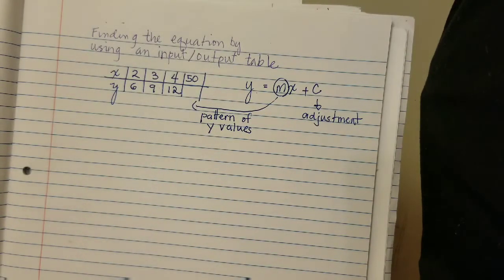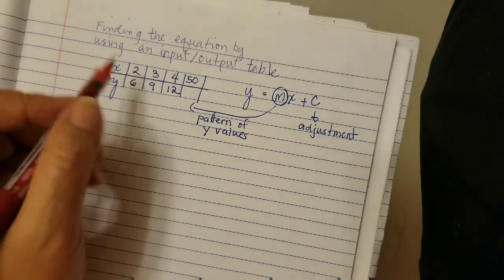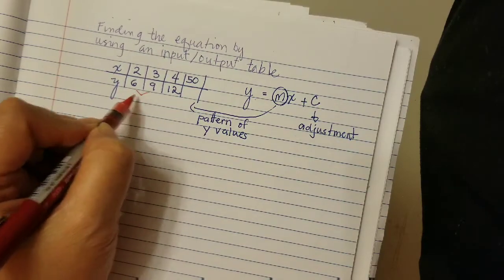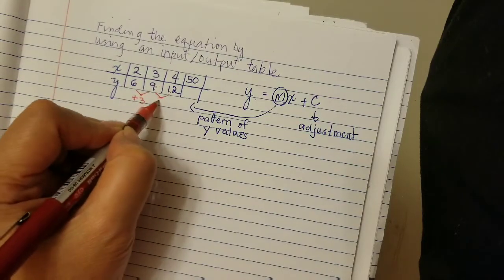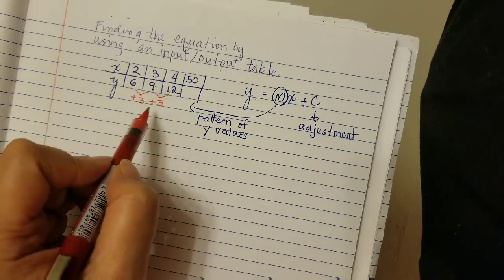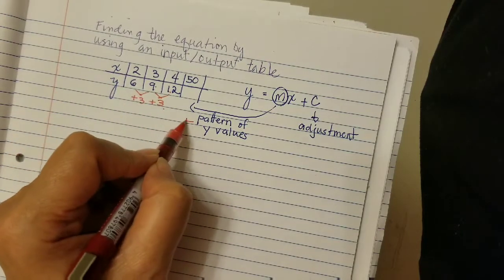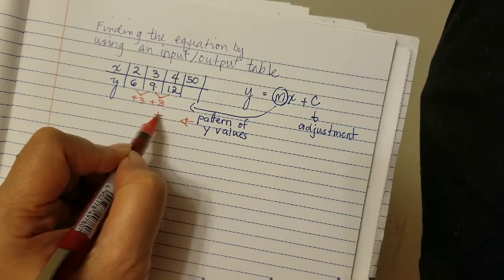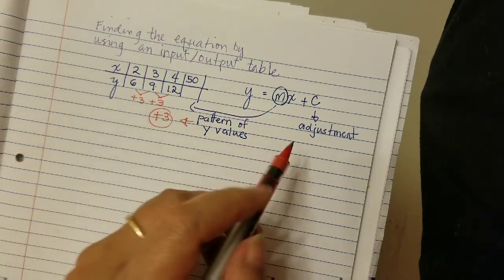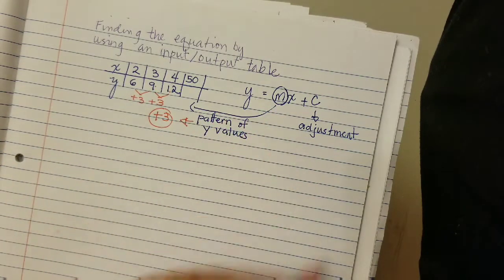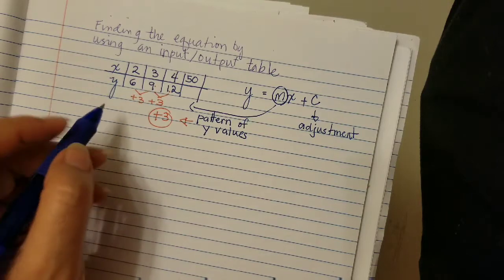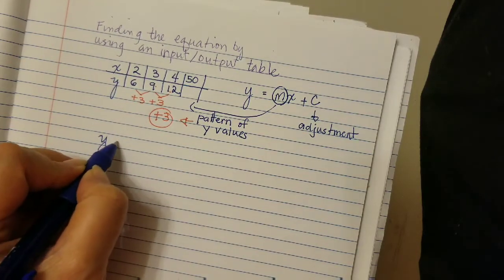Step one: look for the pattern of the y values. How did six become nine? You added three. How did nine become twelve? You added three. So the pattern of the y values increases by three, and that becomes your coefficient of x, which is the slope.